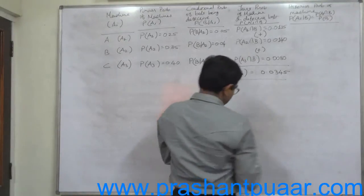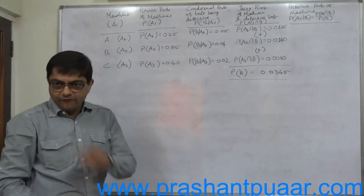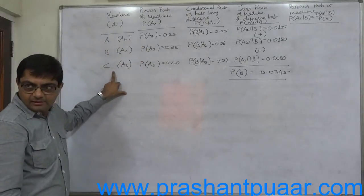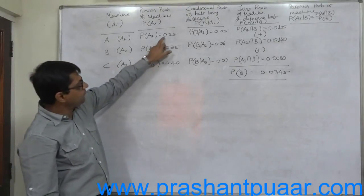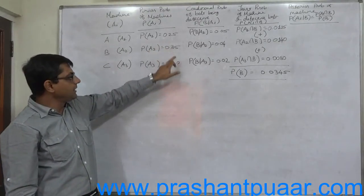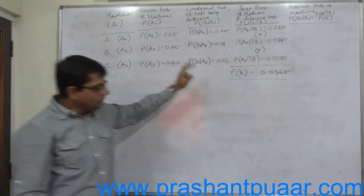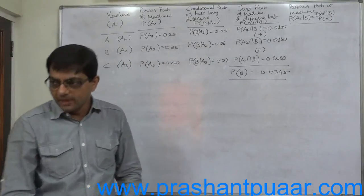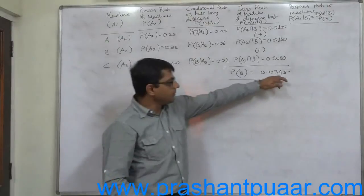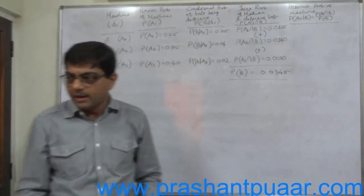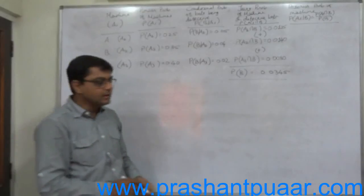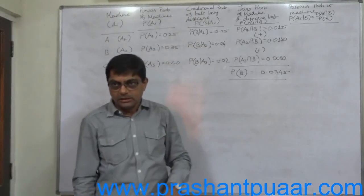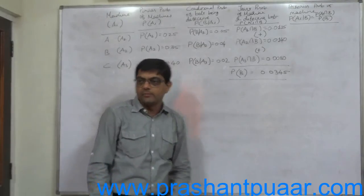Roughly, if 10,000 bolts manufactured by machines A, B and C are stocked together in the ratio 0.25, 0.35, 0.4, we can expect that 345 bolts will be defective. This is actually a long-run average — many times the experiment of finding defective bolts is done, and in the long run this average holds. Out of every 10,000 bolts, we can believe that 345 can be defective.